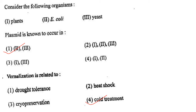Next one: Consider the following organisms — plants, E. coli, yeast. Plasmid is known to occur in option 1, 2 and 3; option 2, 1, 2 and 3; option 3, 1 and 3; option 4, 1 and 2. Answer is option 1: 2 and 3 — E. coli and yeast.